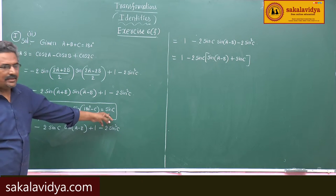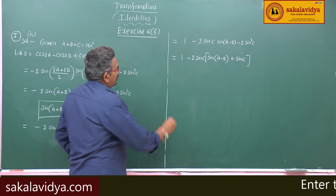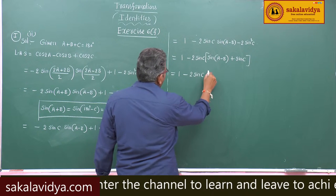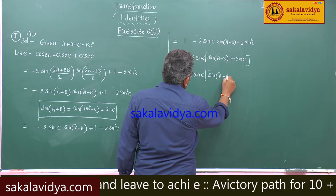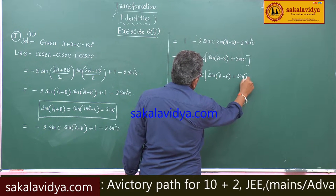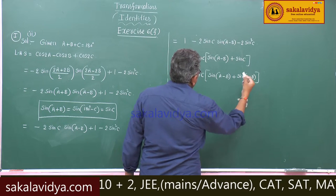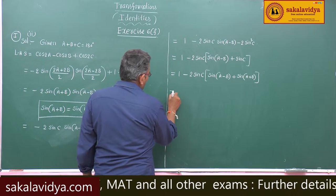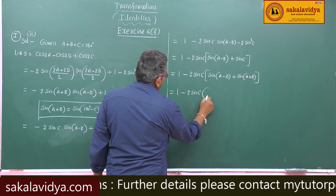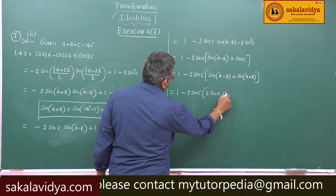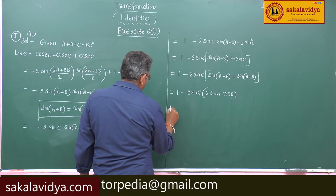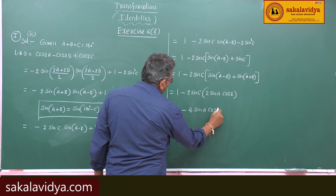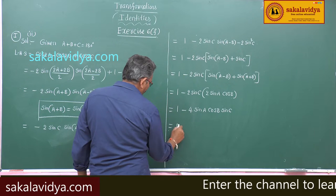Now, sin C here equals sin(A+B). So this is equal to 1 minus 2 sin C into sin(A-B) plus sin(A+B). Since sin(A+B) plus sin(A-B) equals 2 sin A cos B, this can be written as 1 minus 4 sin A sin B cos C, which is equal to the right hand side.